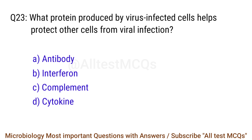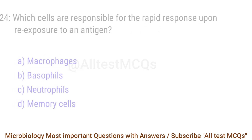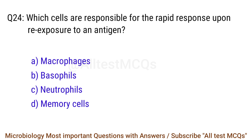Q23. What protein produced by virus-infected cells helps protect other cells from viral infection? The correct answer is option B: Interferon. Q24. Which cells are responsible for the rapid response upon re-exposure to an antigen? The right answer is option D: Memory cells.